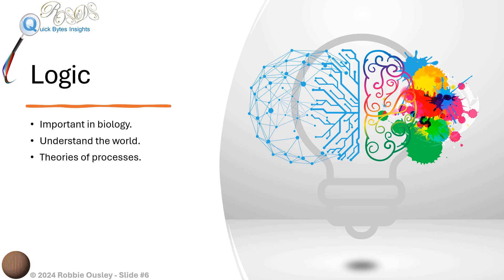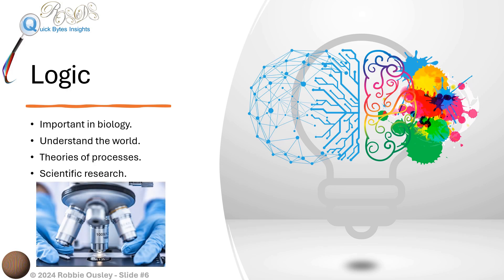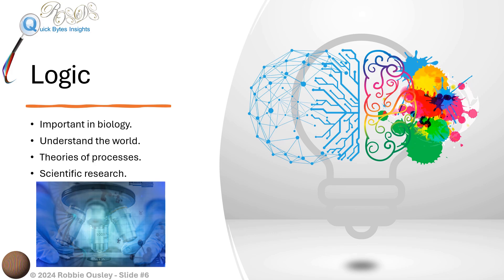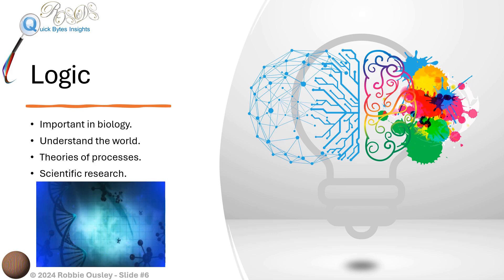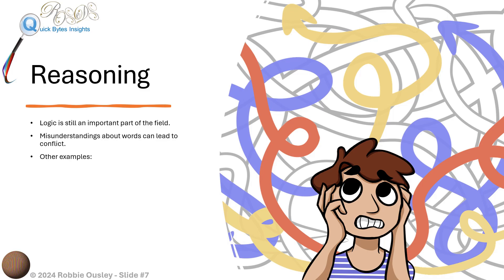Despite this, logic is still an important part of biology. Biologists use logic to understand the natural world, to develop models and theories of biological processes, and logic is essential for scientific research in general. So while not all biology has logical mentalities, logic is still an important part of the field. This is just one example of how misunderstandings about words can lead to conflict.